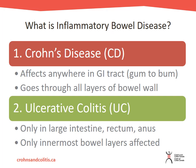Now, what's different between the two? Crohn's disease can affect anywhere in the GI tract — they say from gum to bum, so from mouth to anus. It can affect any portion of that GI tract, and this inflammation goes through all layers of the bowel wall. That is why we see certain complications with Crohn's disease — because all layers of the bowel wall are inflamed and altered.